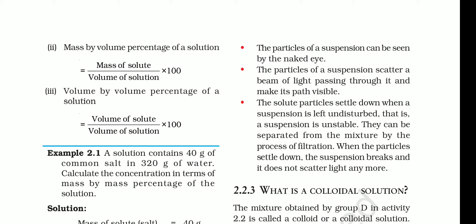The size of particles in suspension is of the order of 10 to the power minus 5 centimeter or more. Particles of suspension scatter a beam of light passing through it and make its path visible — when we pass a torch through it, we can easily see the path.